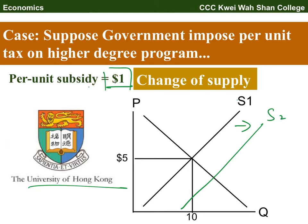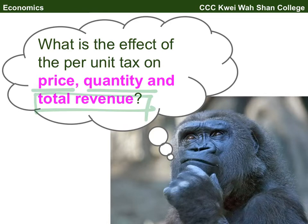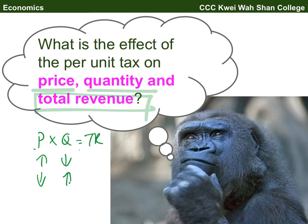So supply increases from S1 to S2, giving us a new equilibrium. The supply shift is simple, but how it affects price and quantity is also straightforward. The most difficult part is about total revenue, because total revenue equals price times quantity. Since it's a supply change, price and quantity move in different directions, so the effect on total revenue is unknown. We need to consider the elasticity of demand.